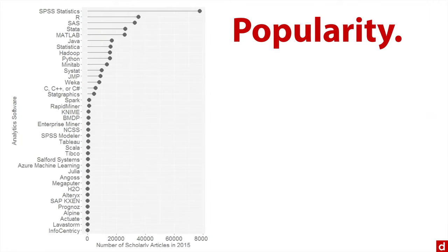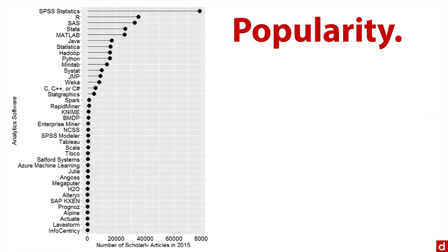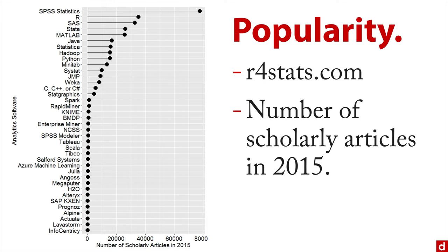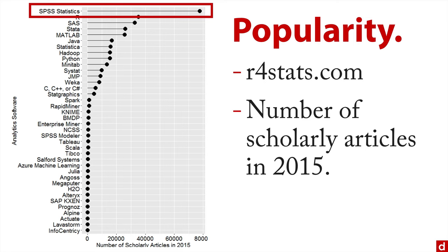One important thing to know is how popular SPSS is. Here's a chart that comes from the excellent website r4stats.com. What it shows is the number of scholarly articles published in 2015 using various statistical packages and languages. And what you can see here is right at the top is SPSS Statistics — number one, by far, in terms of scholarly research.